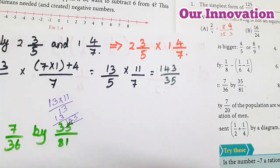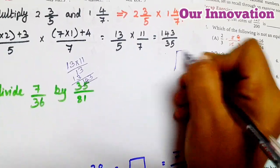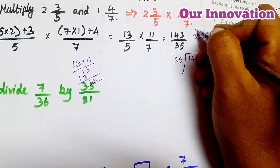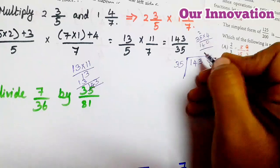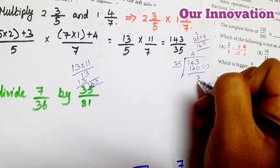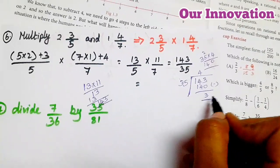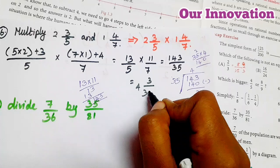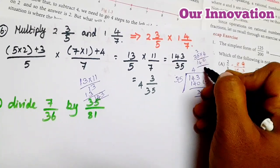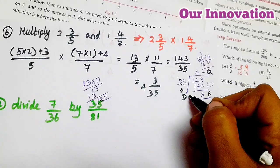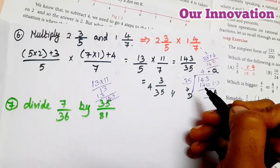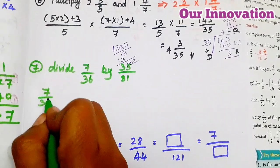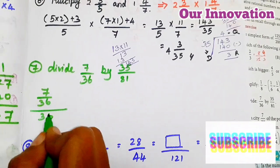So 35 × 4 = 140. Subtracting 3, the remainder. So the answer is 3/5. Dividing: 7 to 1, divide 7/36 by 35/81, so 36 by 35.